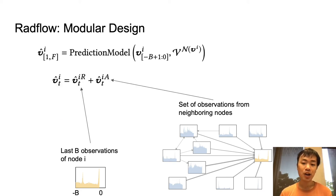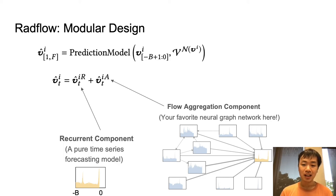To allow RADflow to have a modular design, we enforce a constraint where the output of the model is simply the sum of two components. The prediction contribution from the recurrent component and the prediction contribution from the flow aggregation component.